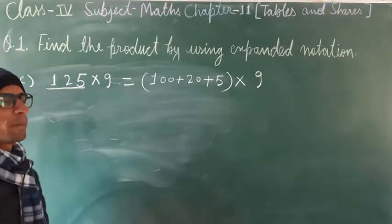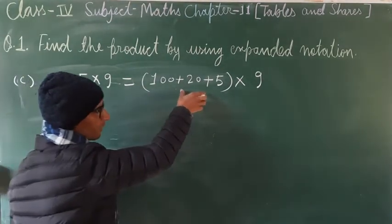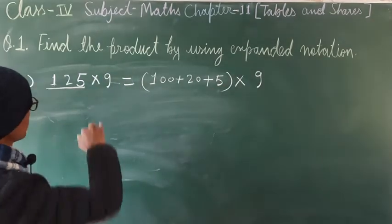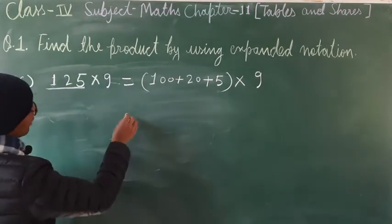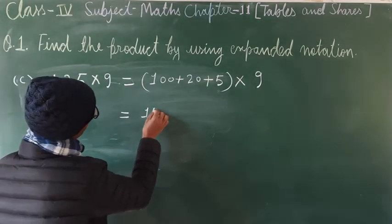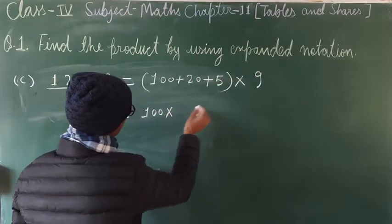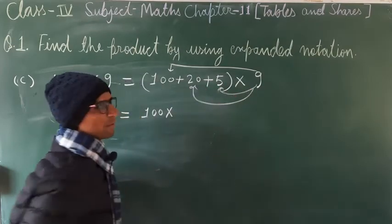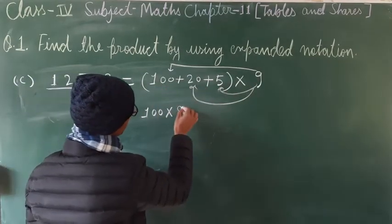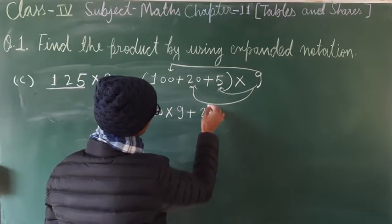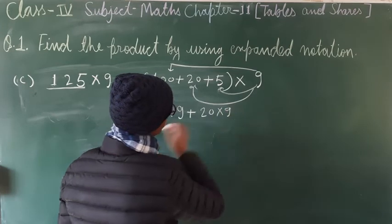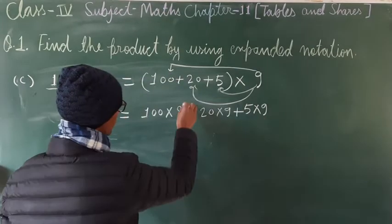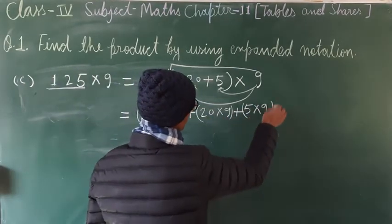Write 125 in expanded form: 100 + 20 + 5, then multiply by 9. Now multiply each part by 9: 100 × 9, then plus 20 × 9, then plus 5 × 9. We have written it in multiplication form.